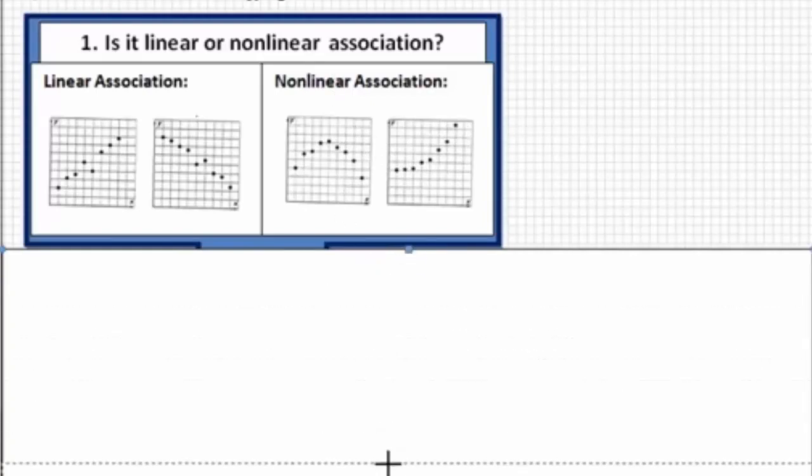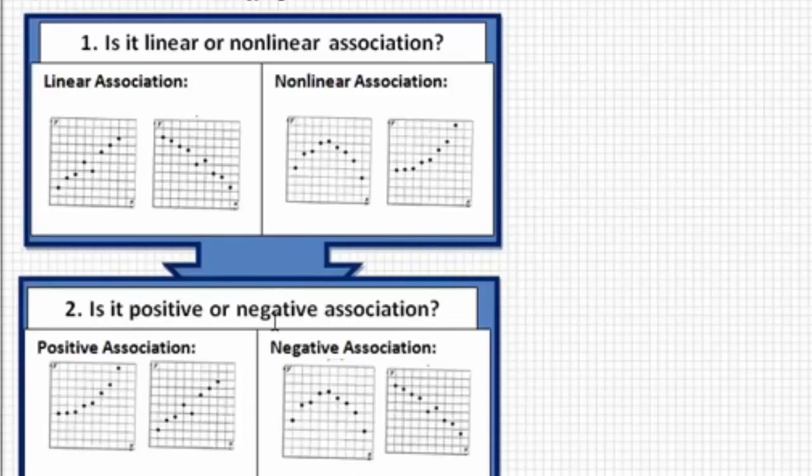The second question that we're going to ask ourselves is, is it positive or negative association? So here I have positive association. So here's our nonlinear, it's actually this nonlinear one here. But because it's going upward and it's increasing as we read the graph from left to right, it's nonlinear positive association. Here I took one of the graphs of our linear. Again, it's increasing, although not with a curve, but it is increasing as we read our graph from left to right. So this example is an example of linear positive association.